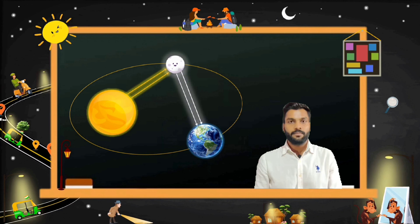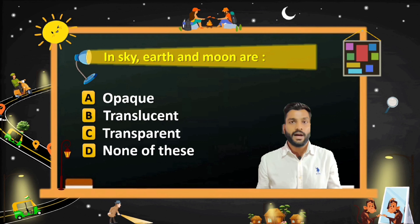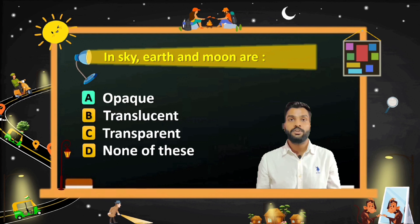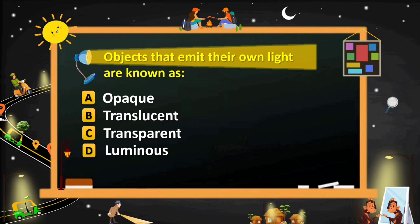Moving to the next question: in the sky, Earth and moon are? The answer is opaque, because Earth and moon are both non-luminous objects. And here is the last question: objects that emit their own light are known as? And the answer is luminous objects.